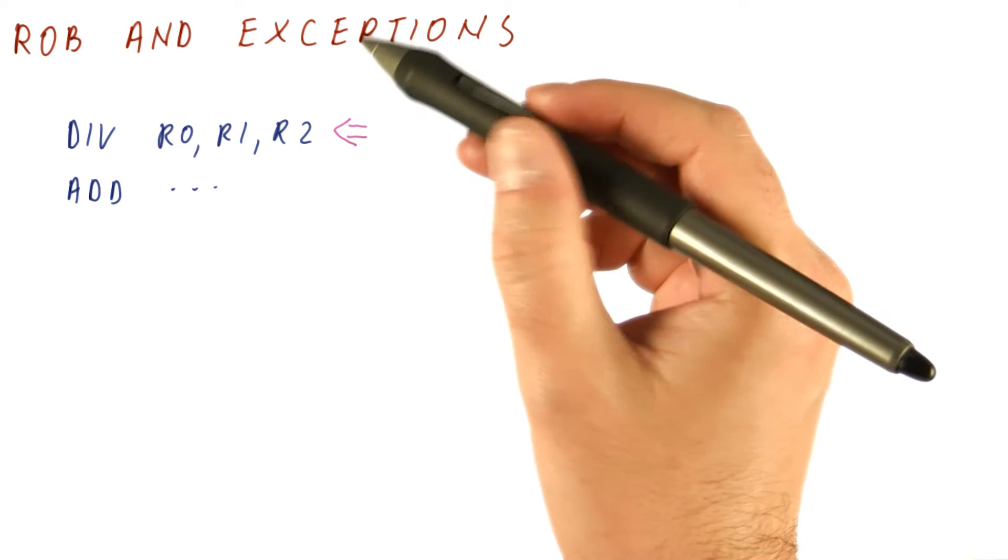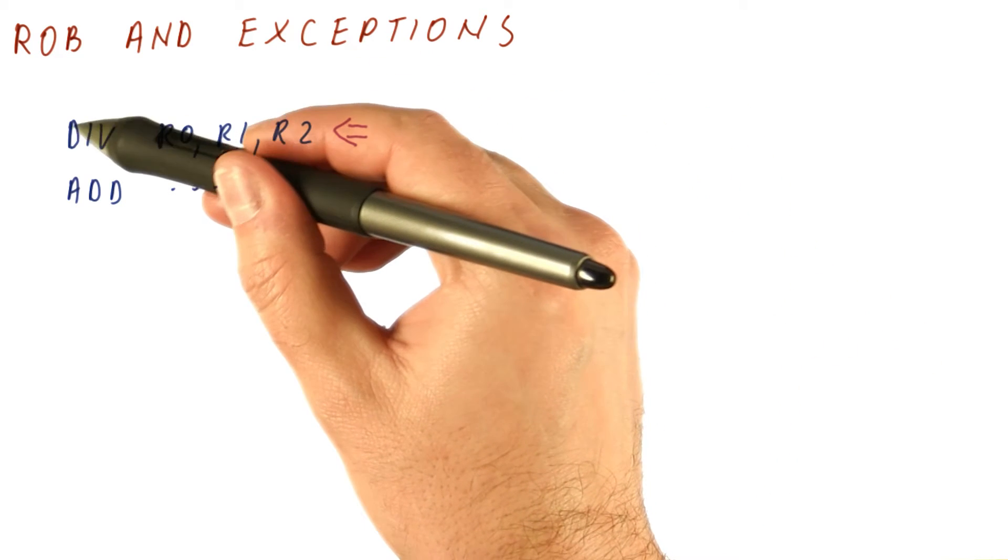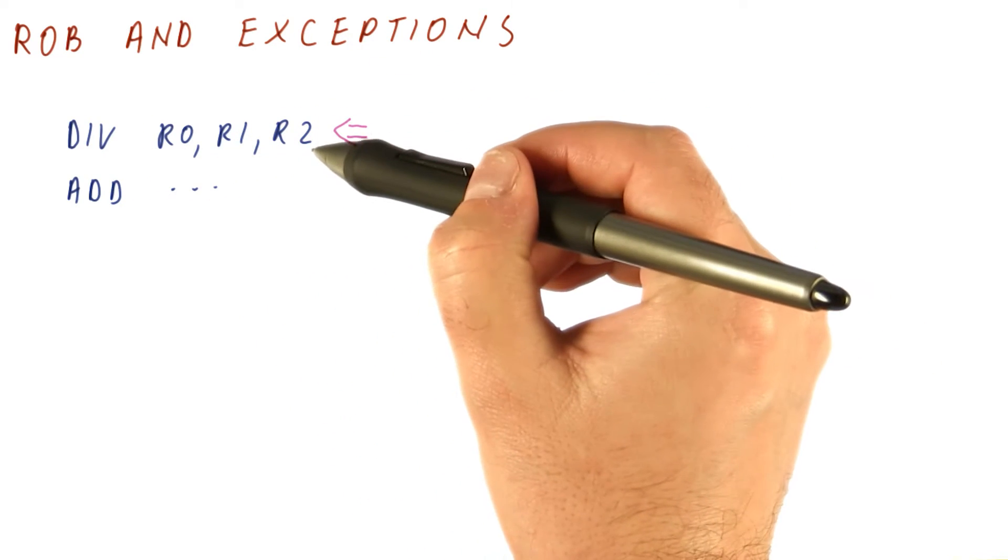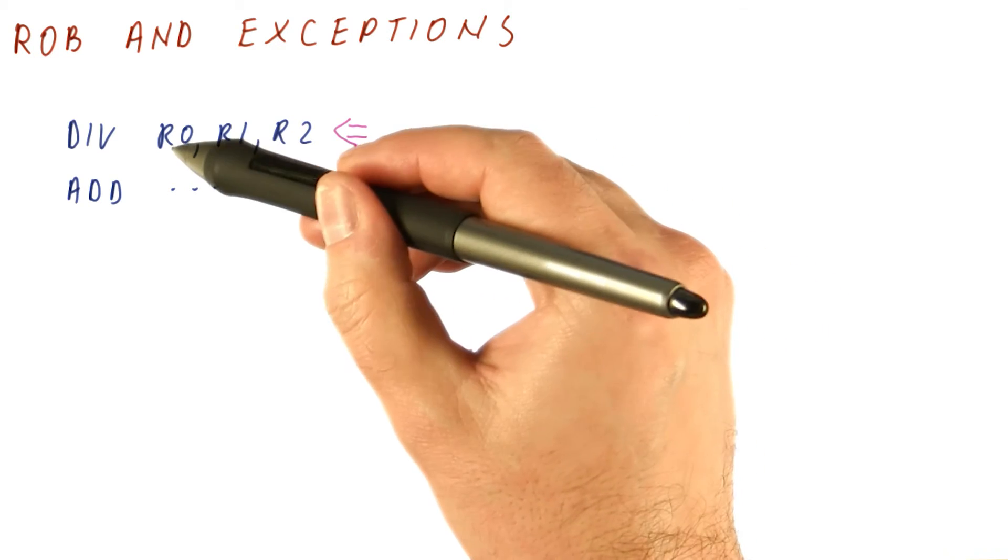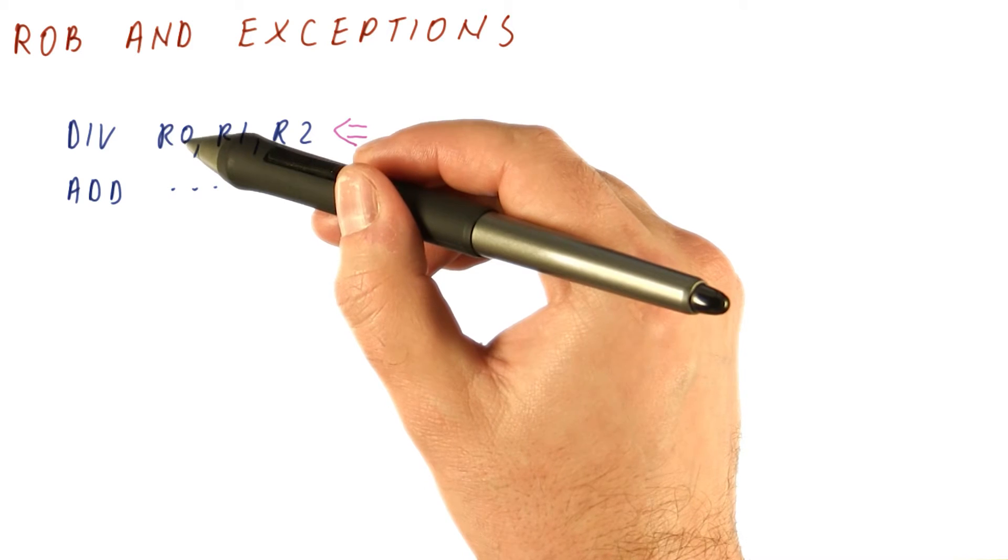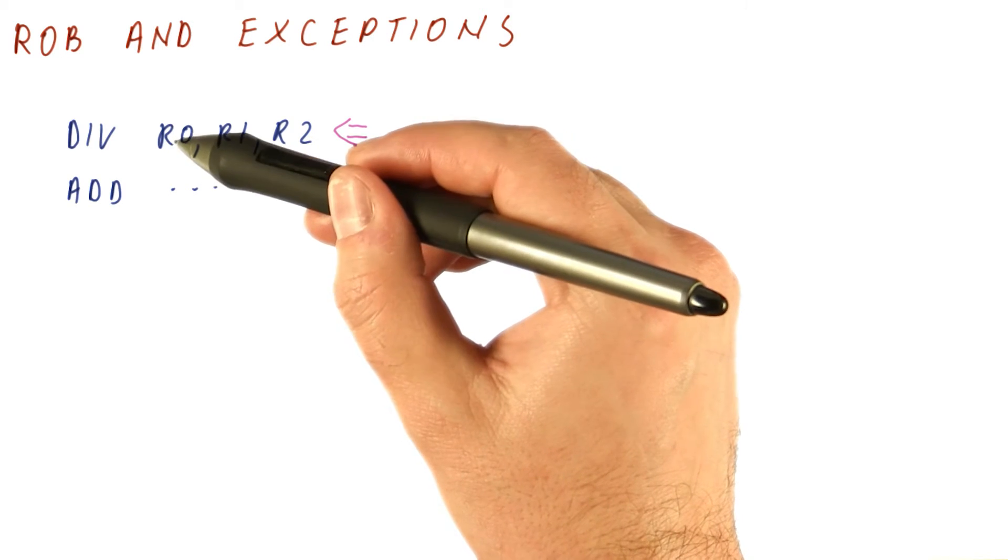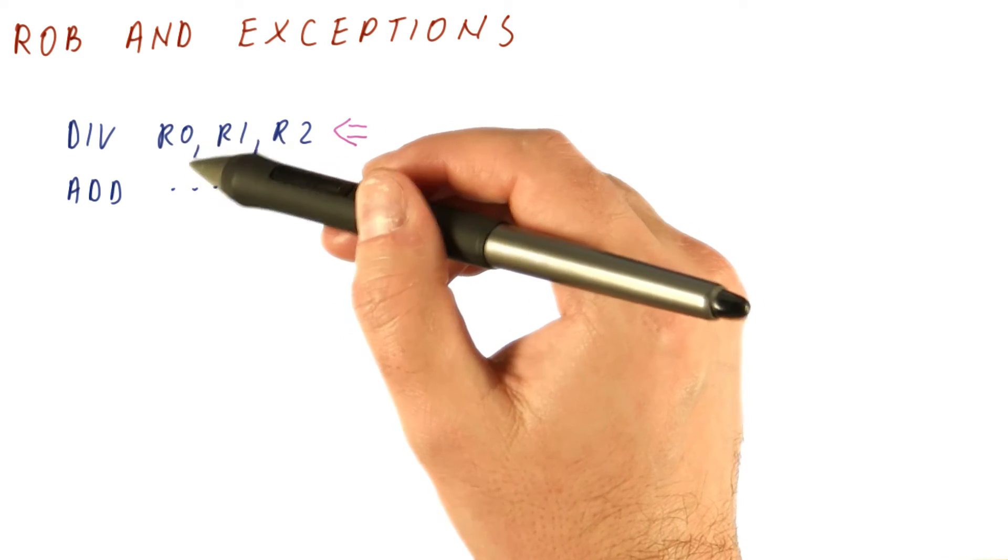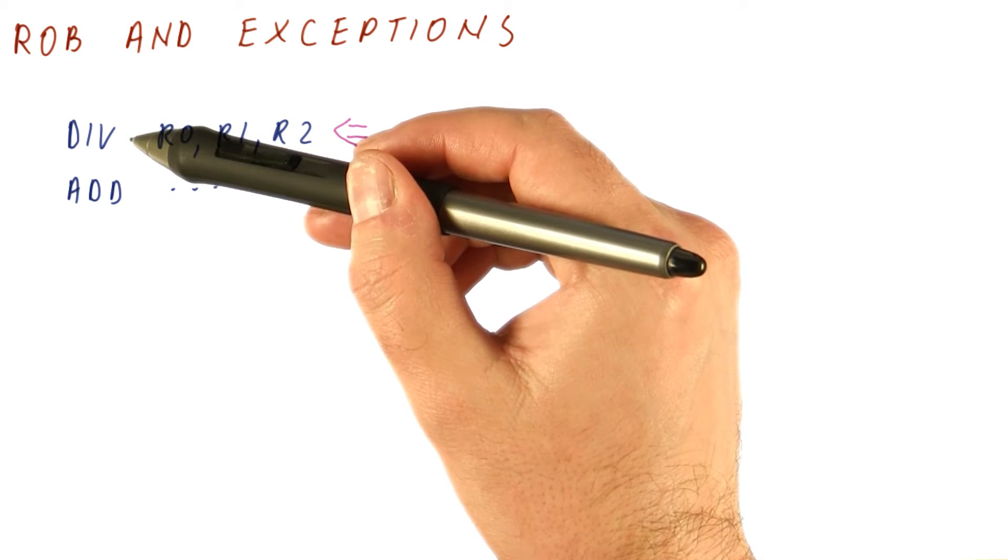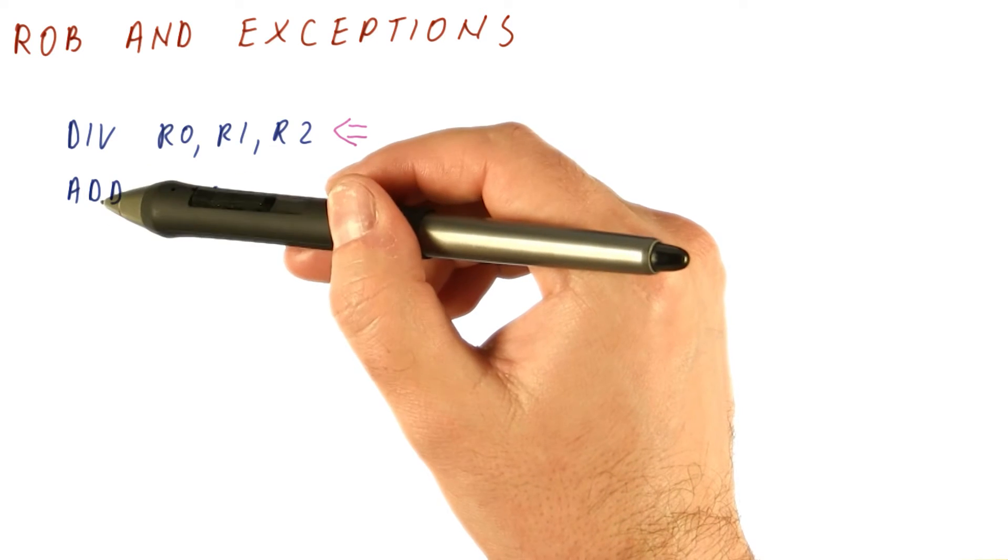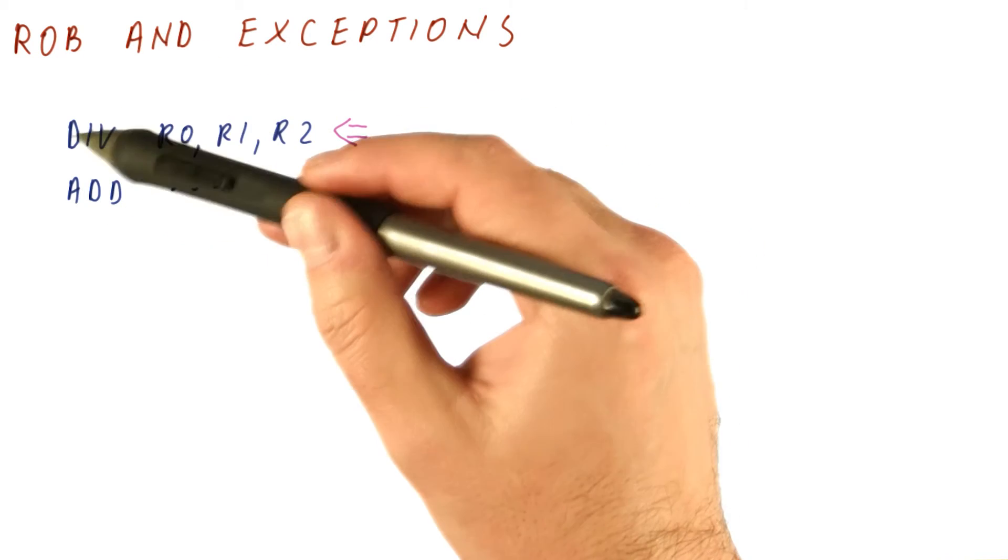So how does the ROB help? What we do is treat the exception just like any other result. When we determine that R2 is zero, instead of producing a result for R0, we mark the result in the ROB as exception instead of a value. When the divide reaches the commit point, the add still hasn't committed and everything before divide did.